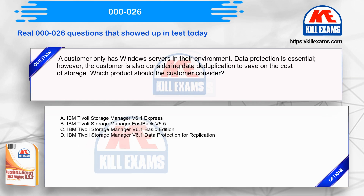A customer only has Windows servers in their environment. Data protection is essential; however, the customer is also considering data deduplication to save on the cost of storage. Which product should the customer consider? Option A: IBM Tivoli Storage Manager v6.1 Express. Option B: IBM Tivoli Storage Manager Fastback v5.5. Option C: IBM Tivoli Storage Manager v6.1 Basic Edition. Option D: IBM Tivoli Storage Manager v6.1 Data Protection for Replication.